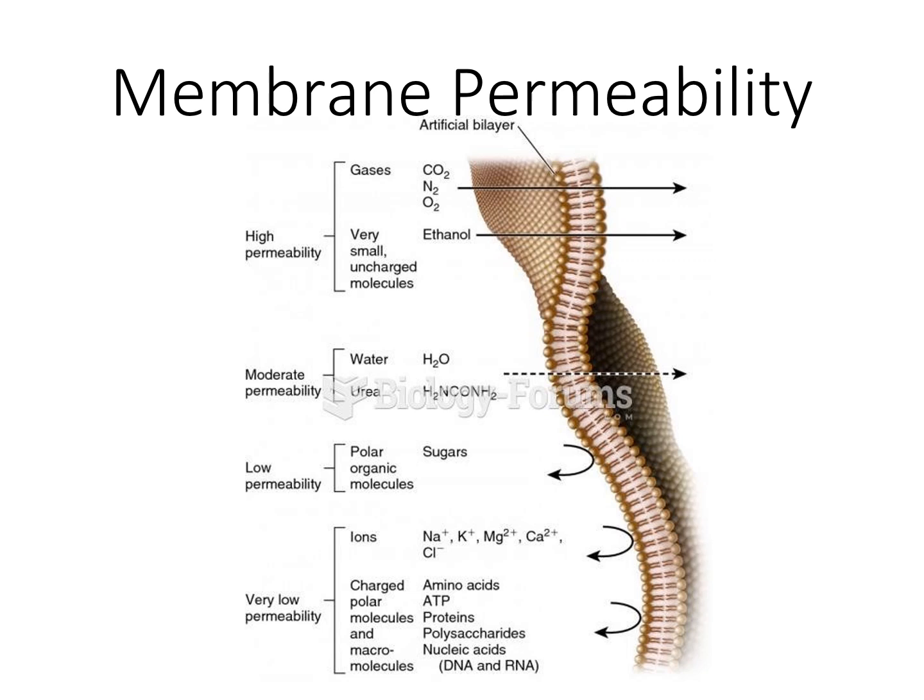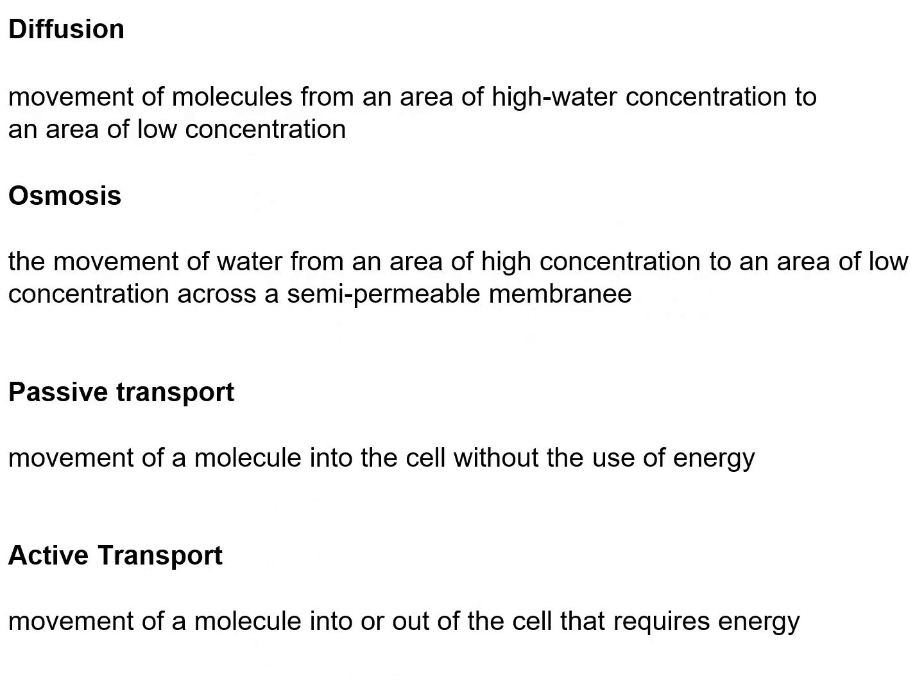Small uncharged molecules such as ethanol can easily penetrate the membrane. Going down the list, water has moderate permeability; polar organic molecules such as sugars have low permeability; and ions, charged polar molecules, and macromolecules such as amino acids, ATP, proteins, polysaccharides, nucleic acids, and ions such as sodium, potassium, magnesium, calcium, and chlorine have very low permeability. Key terms you need to know regarding membrane transport are diffusion, osmosis, passive transport, and active transport.